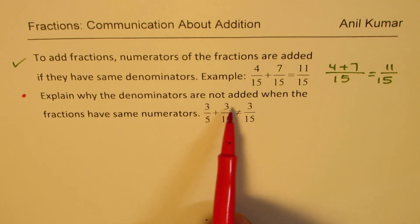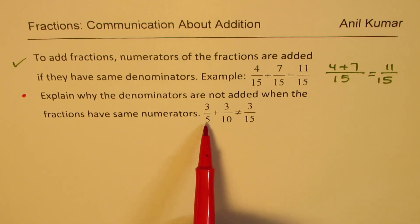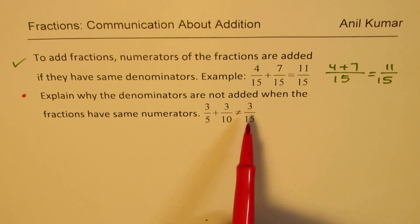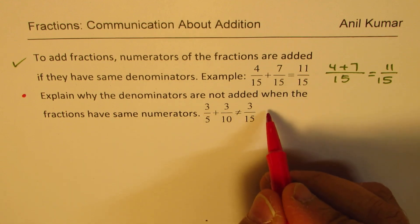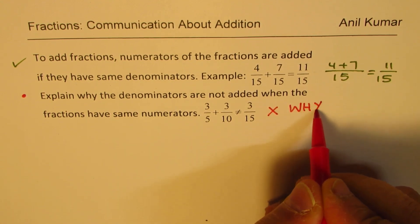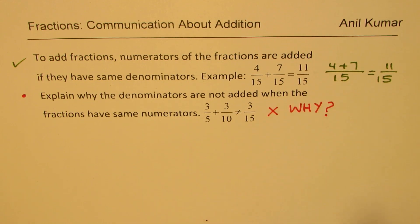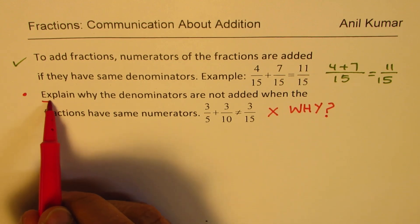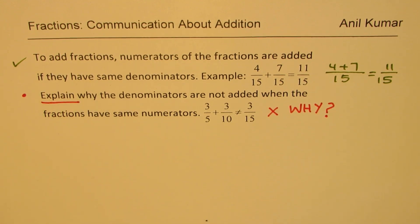We don't add 5 and 10 to make it 3 over 15. This is wrong. The question here is why? We know this is wrong, but the question here is why, how do you explain it?